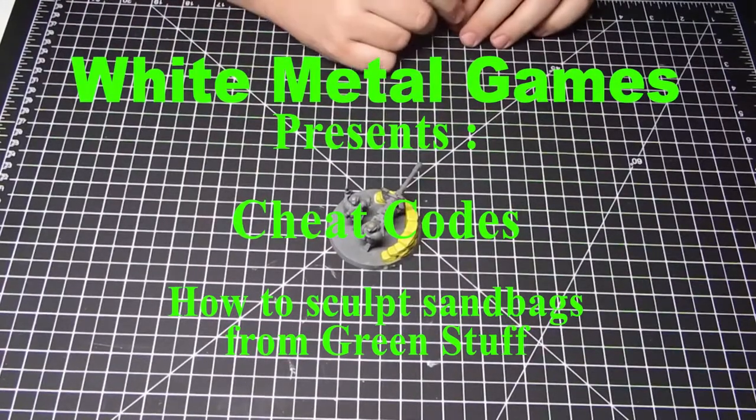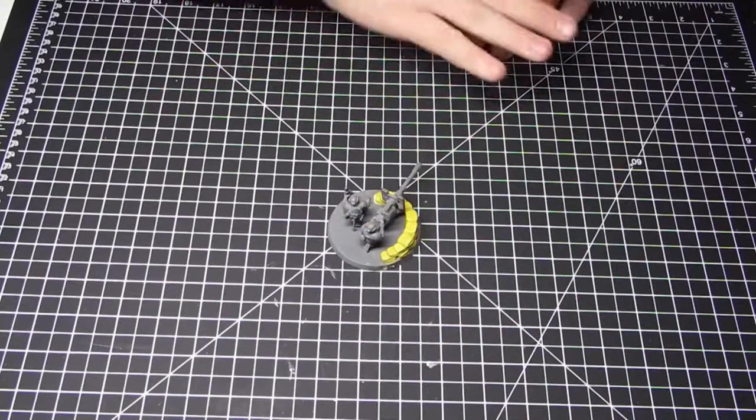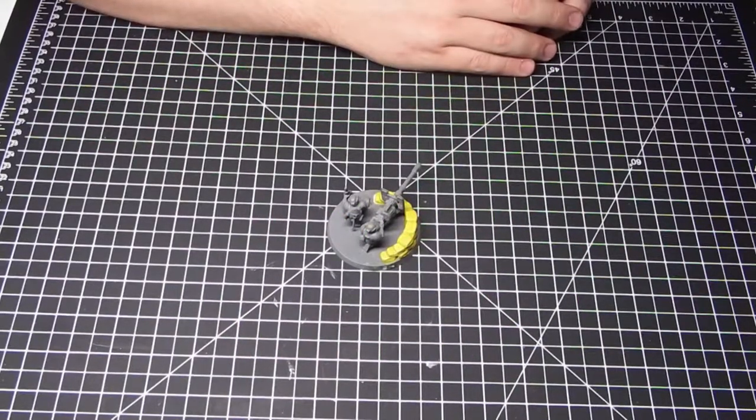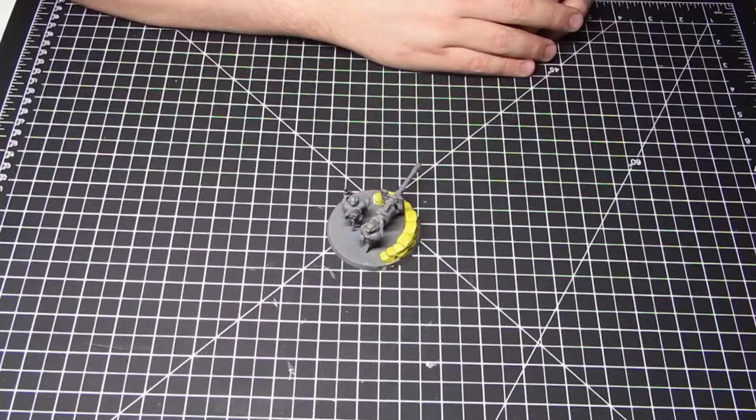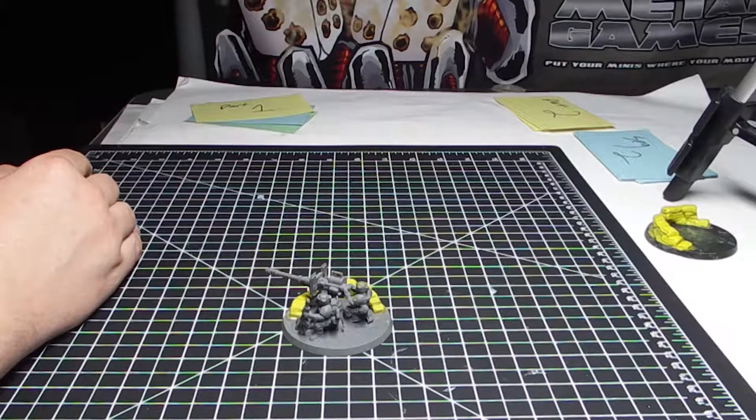Hey guys, Caleb with White Metal Games here, and we're back for another cheat code. Today, anytime we do a project, we always have a little leftover green stuff at the end. Sculpting is something we have to commonly do, even if it's just for filling gaps.